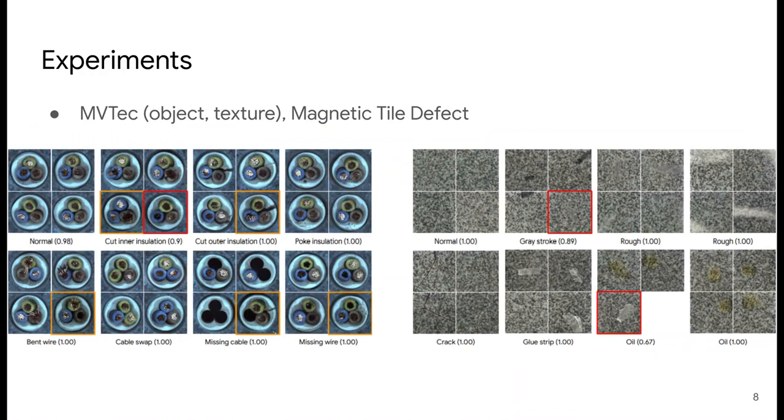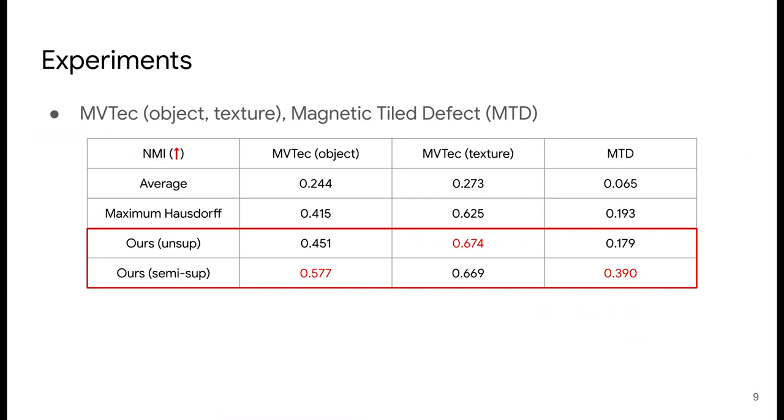We report quantitative results in terms of normalized mutual information, or NMI. The higher, the better. As we see, our proposed method results in higher NMI compared to baselines.